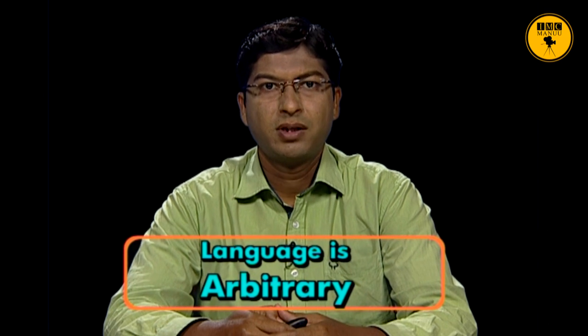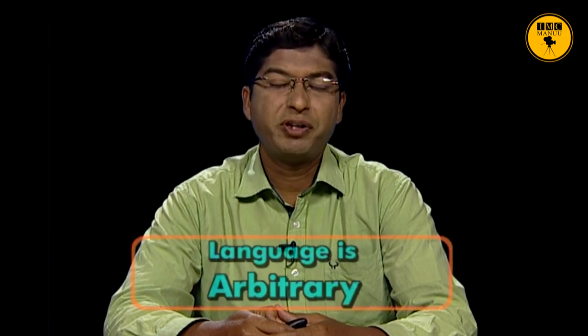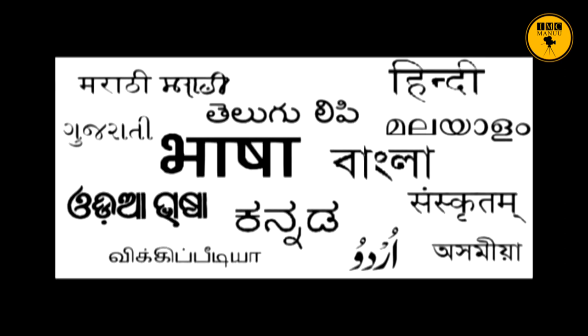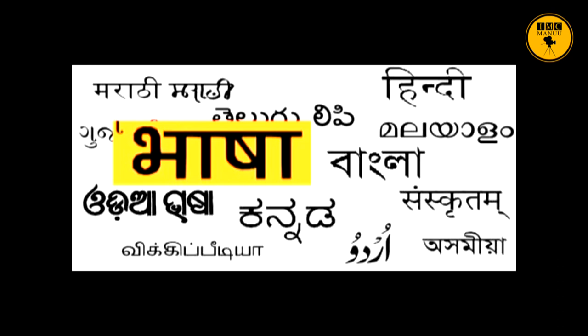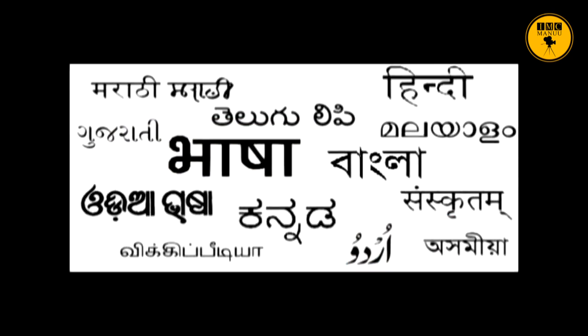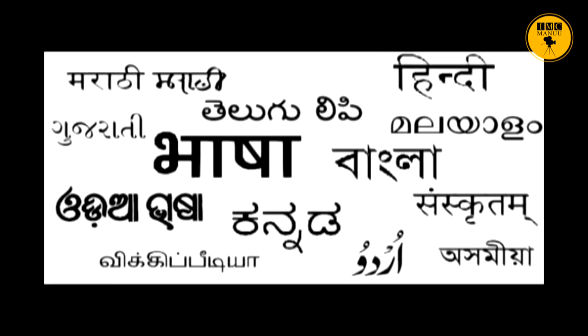The next characteristic is that language is for communication. The main purpose of language is communication, so a person's speech must be intelligible to others. For this, one must acquire the right pronunciation and intonation. Another important characteristic is that language is arbitrary — there is no relationship between the words of a language and their meaning. The relationship between a word and its meaning is arbitrary. There is no reason why something is called 'language' in English, 'bhasha' in Hindi, and 'zaban' in Urdu. Words and their meanings evolve over the course of time.